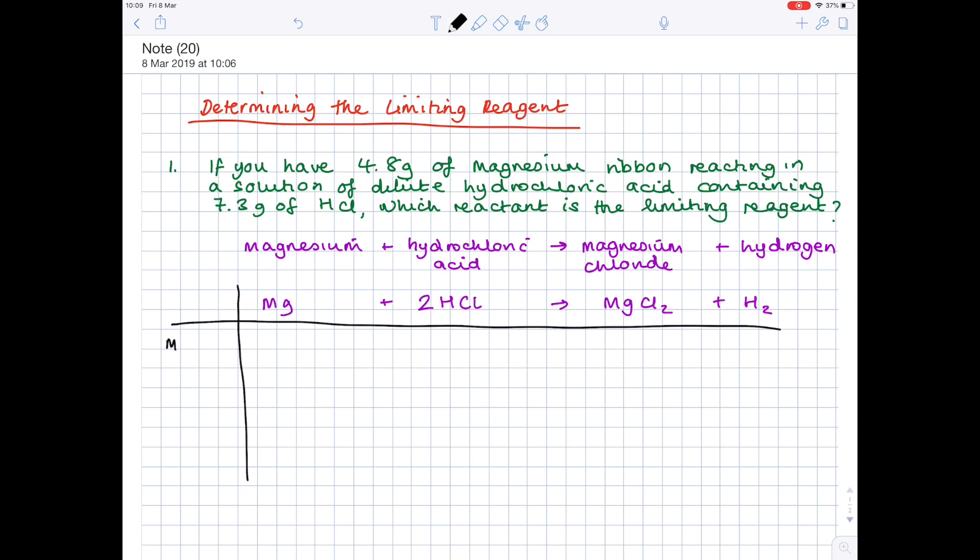In my table, I'm going to have these headings: mass, MR, and number of moles. Now we're trying to determine which of the two reactants is the limiting reagent. So we're going to start by writing down the information we know from the question. We know we've got 4.8 grams of magnesium and we know that we have 7.3 grams of hydrochloric acid.